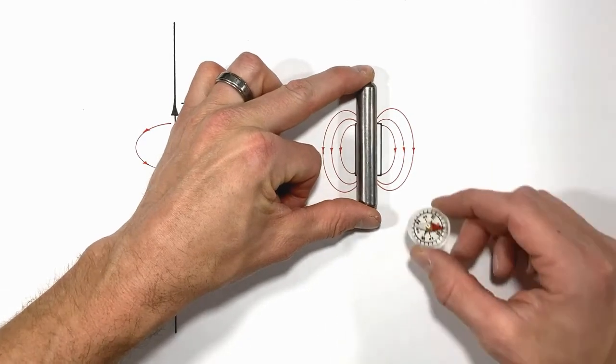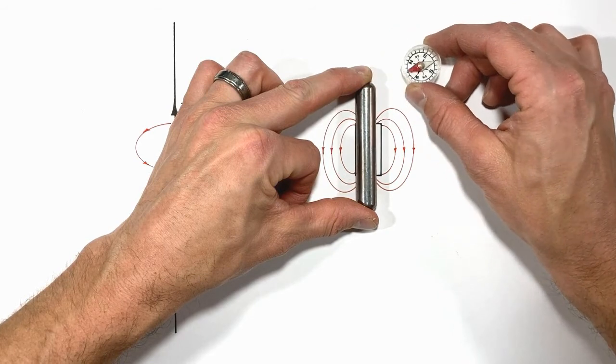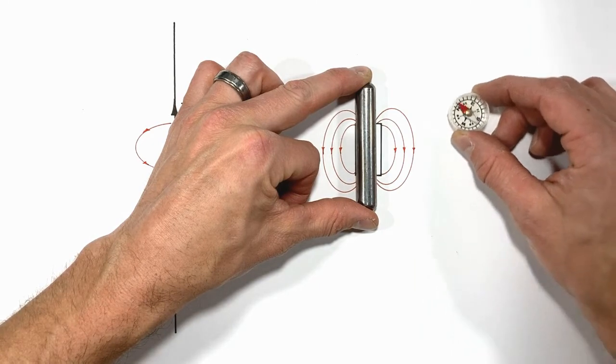If I was to take a permanent magnet and a compass and hold that compass close to the permanent magnet, you'll see that magnet is always pointed in the direction of the magnetic field no matter where I place that magnet.